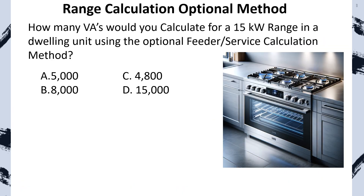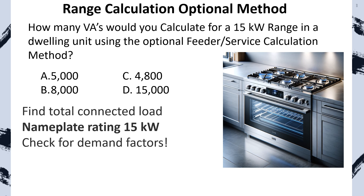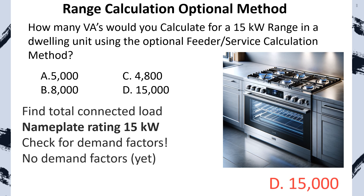How many VAs would you calculate for a 15 kW range in a dwelling unit using the optional method? First find our total connected load — we use the nameplate of all appliances. No demand factor is applied yet, and the answer would be 15,000 VAs.